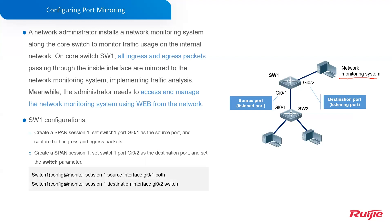The commands are quite easy to understand. On SW1, the command is: monitor session 1 source interface G0/1 both — where 'both' means both ingress and egress. And next: monitor session 1 destination interface G0/2 switch. That's the configuration command to satisfy the requirements.